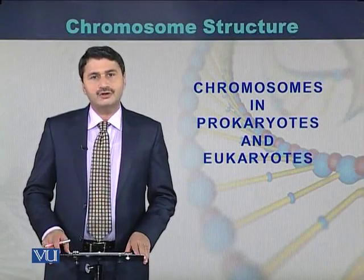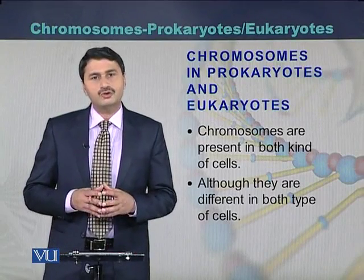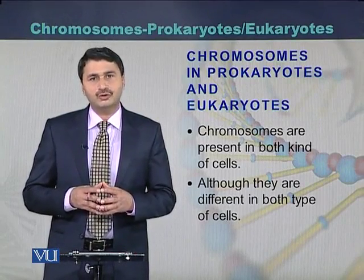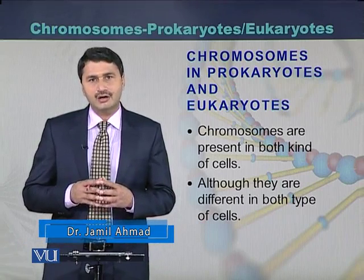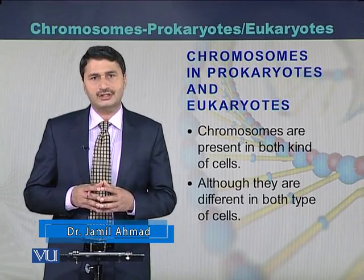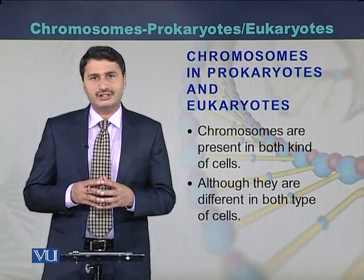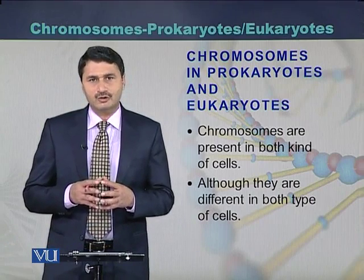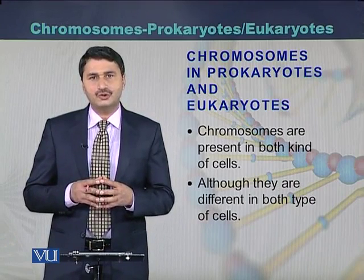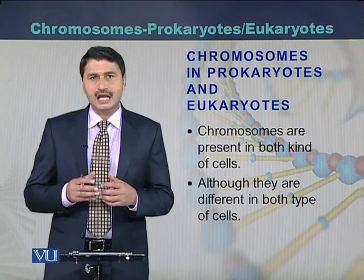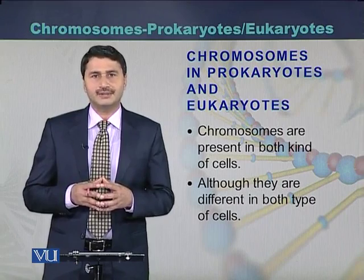Chromosomes are present in both prokaryotic and eukaryotic cells. In the case of prokaryotic cells, there is a single chromosome which is in a circular form. While in the case of eukaryotic cells, there can be multiple chromosomes and they are usually in a linear shape.